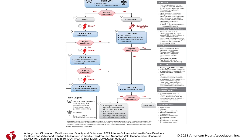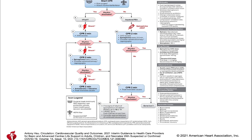The second team member can help provide extra support for additional procedures such as compressions once the airway is established. Assign the intubator with the highest chance of first pass success, using the method the intubator is most comfortable with, while protected with appropriate PPE for AGPs. Intubate with a cuffed endotracheal tube to minimize aerosolization of respiratory particles. Consider the use of video laryngoscopy if available and if the operator is experienced with this technique, as this may reduce direct exposure of the intubator to respiratory aerosols.